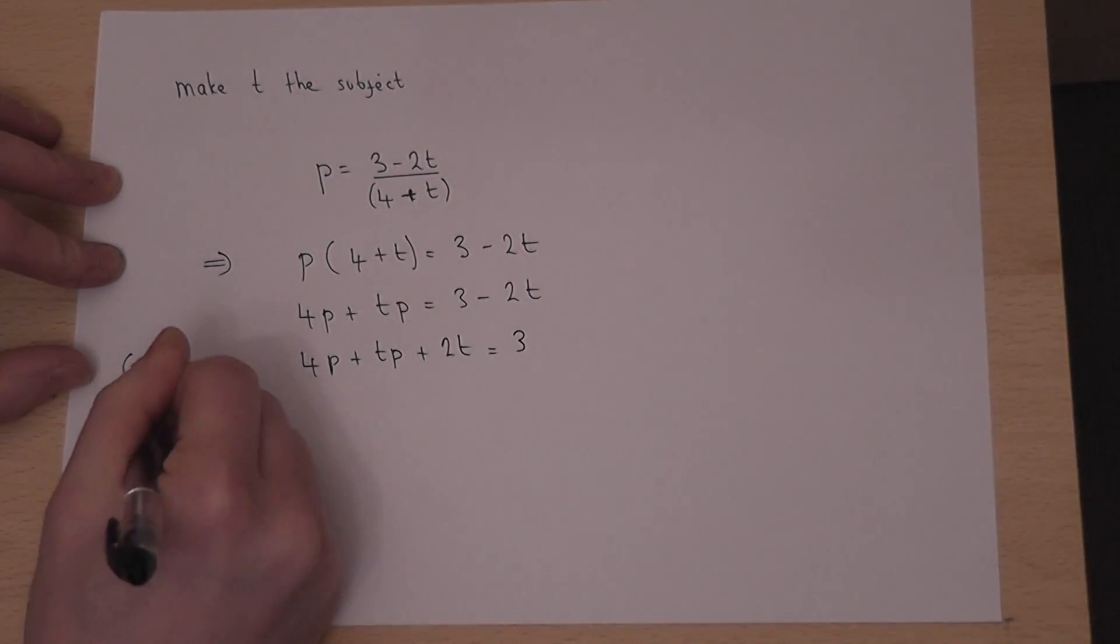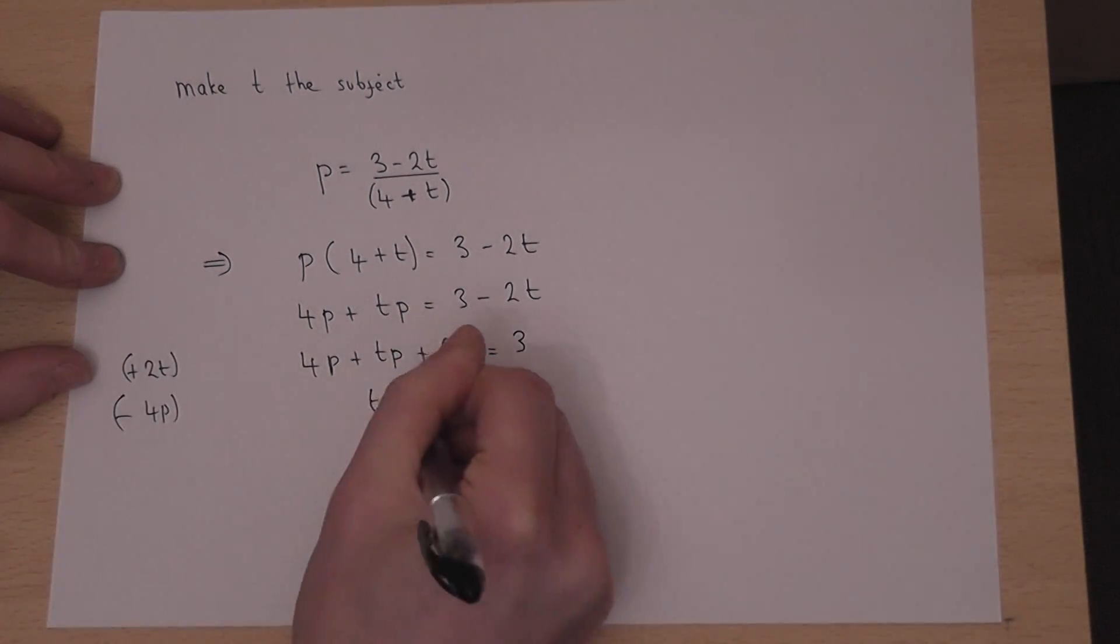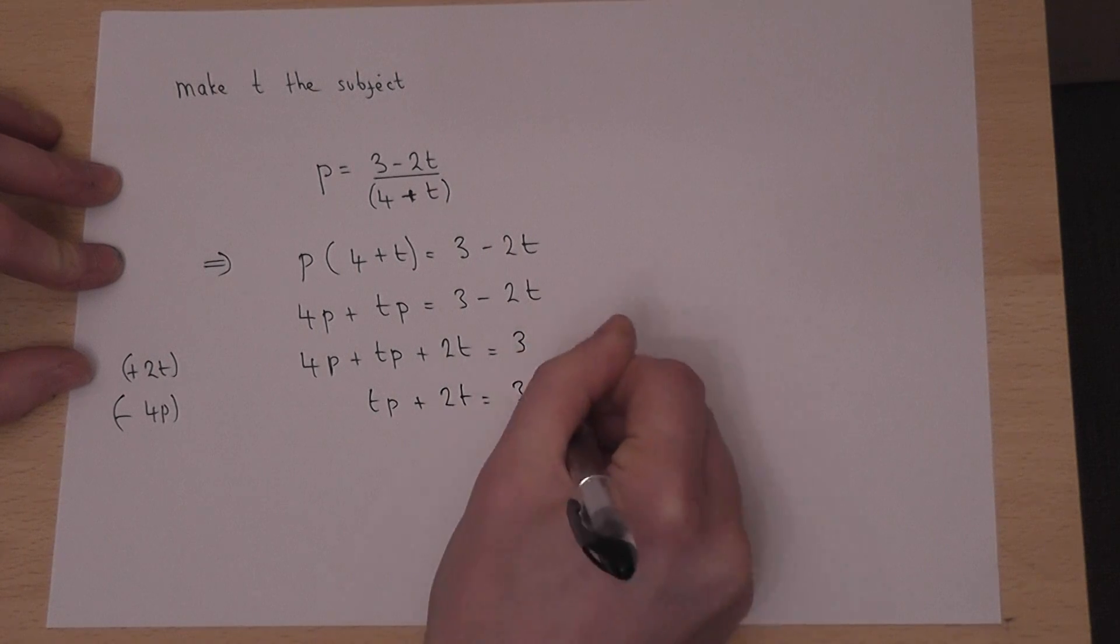I can then take away the 4p. So tp plus 2t equals 3 take away 4p.